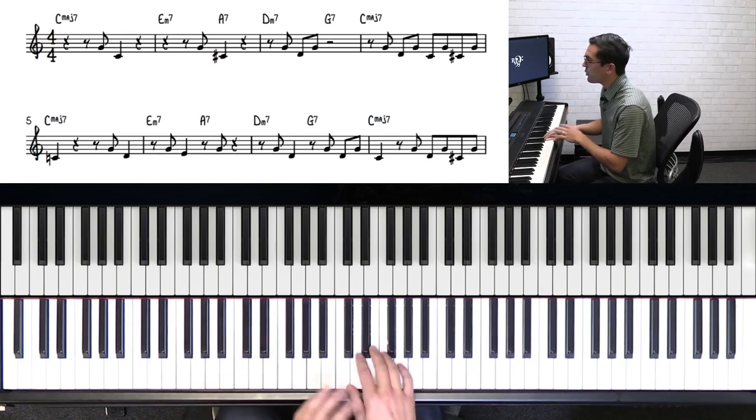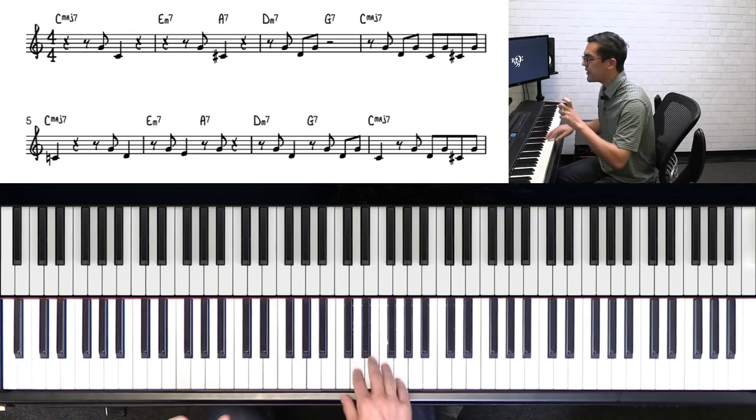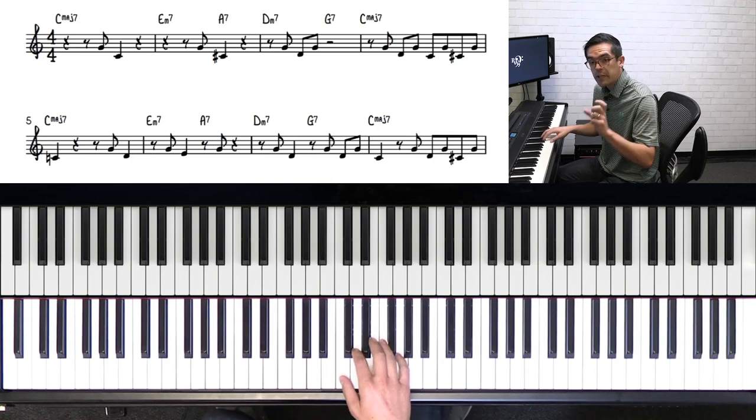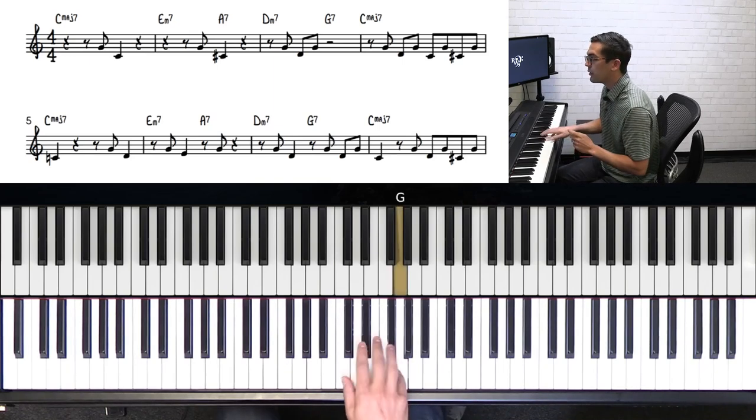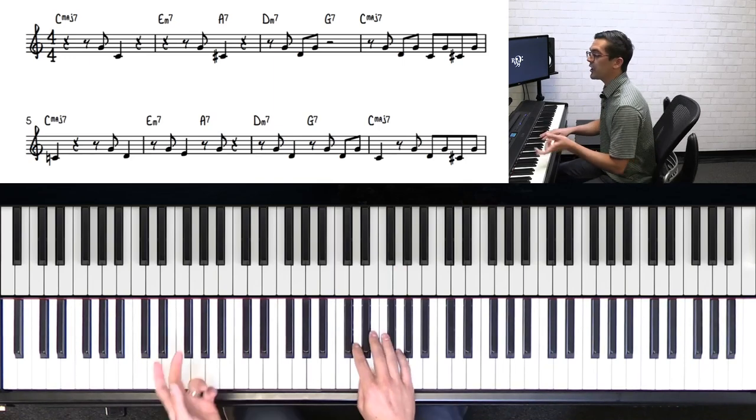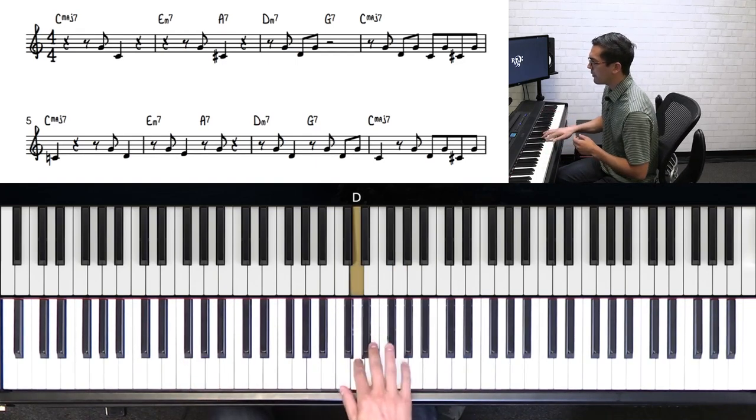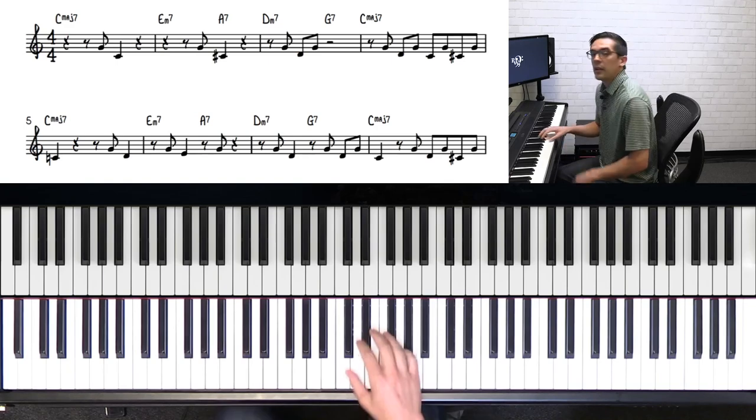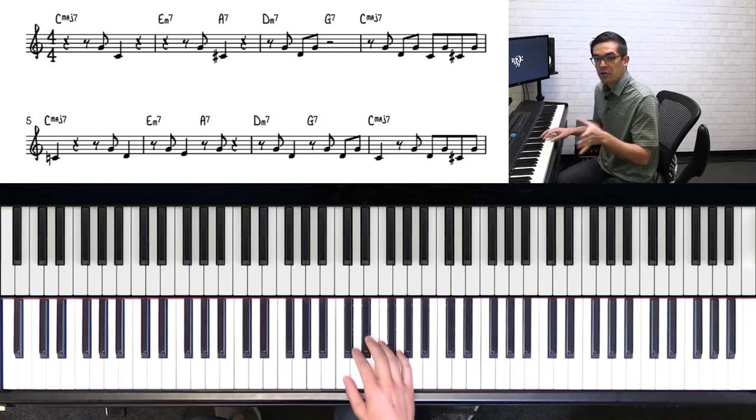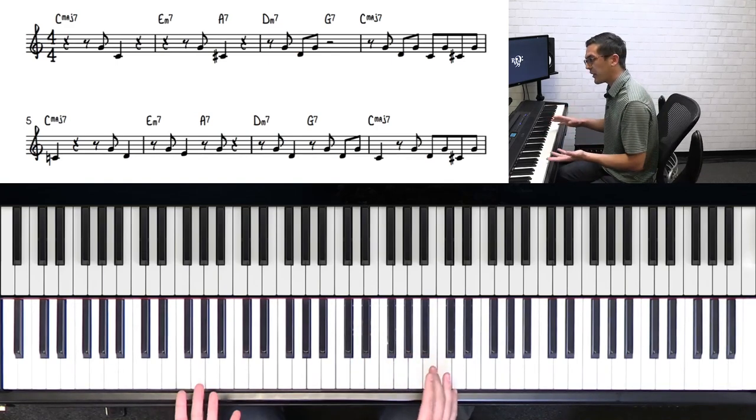Then going into measure eight over the G7 chord, he kind of combines the G and D and then followed immediately by the G and C. And then going into measure nine, he kind of repeats what he did in measure four again.